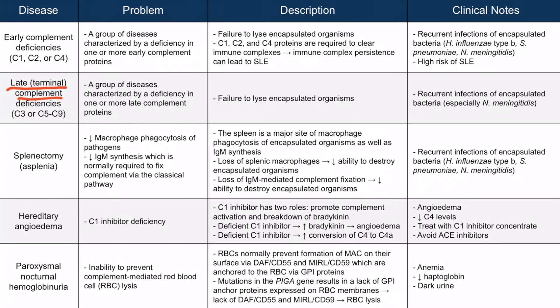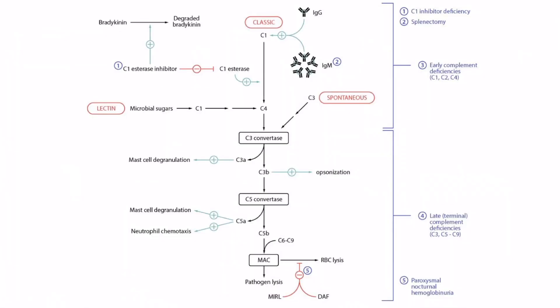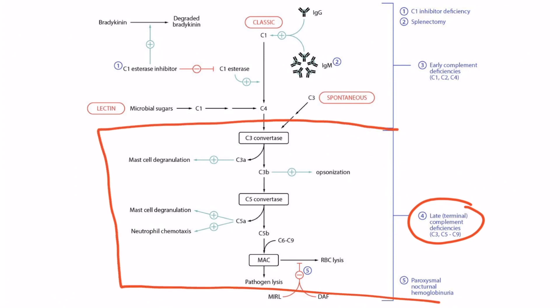Late or terminal complement deficiencies involve a C3 deficiency or any of the proteins from C5 to C9. There's a deficiency somewhere leading to failure to lyse encapsulated organisms — much like early complement deficiencies. However, here's where they differ: in late deficiencies, you're really only concerned with Neisseria infections, not so much H. flu or Strep pneumo. MAC won't be formed and you can't lyse encapsulated organisms, but the main clinical outcome is specifically infections with Neisseria meningitidis. The reason they don't get Strep pneumo or H. flu type B is not perfectly clear.